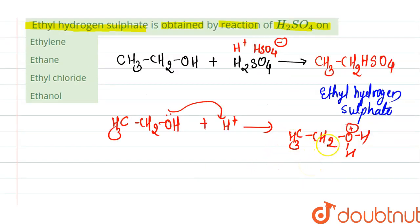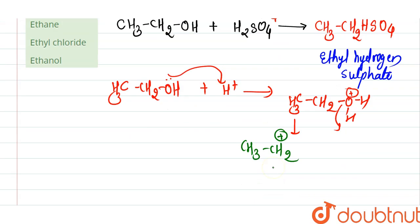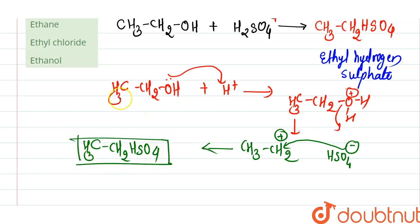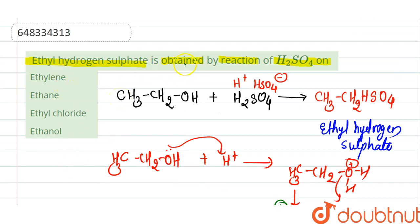Water gets removed and a CH₃CH₂⁺ carbocation is generated. Further, HSO₄⁻ attacks on the carbocation and formation of CH₃CH₂OSO₄H, that is ethyl hydrogen sulfate, occurs. So ethyl hydrogen sulfate is obtained by reaction of H₂SO₄ on ethanol. Ethanol is the correct option — option number 4 is correct. Thank you.